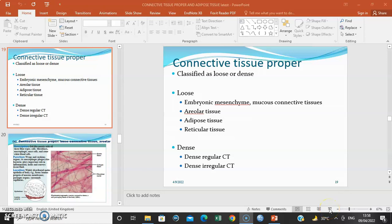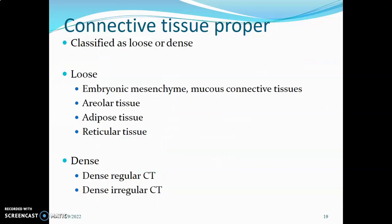Hello everyone, it's Dr. Minda here. We continue with our series on connective tissue. Connective tissue proper is classified into loose or dense connective tissue. Examples of loose connective tissue include embryonic mesenchyme and mucous connective tissue, as well as areolar tissue, adipose tissue, and reticular tissue. Dense connective tissue includes dense regular and dense irregular.